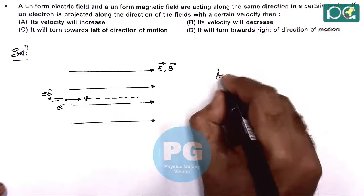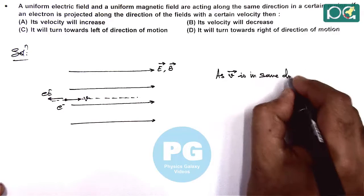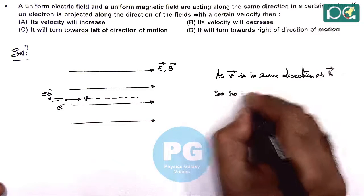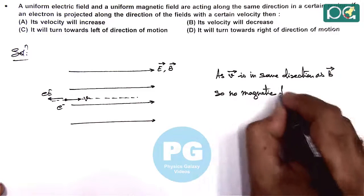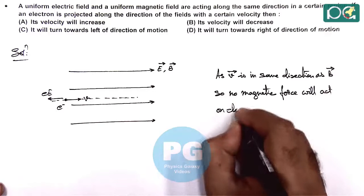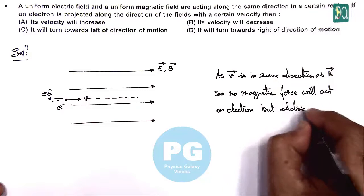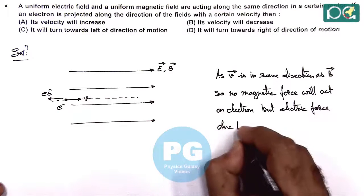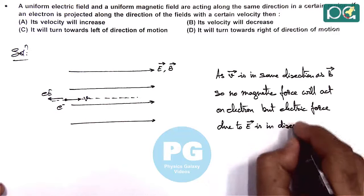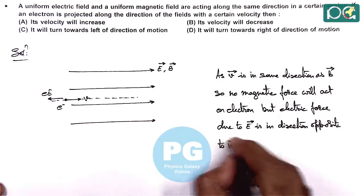As v vector is in the same direction as B vector, no magnetic force will act on the electron. However, the electric force due to E vector is in the direction opposite to v vector, so the magnitude of v vector will start decreasing.